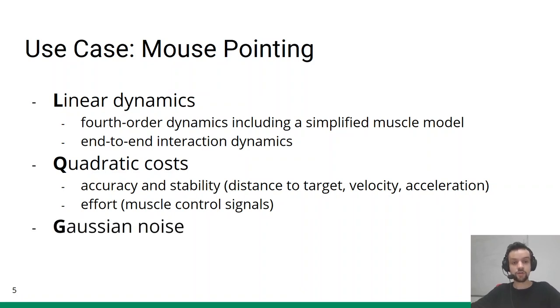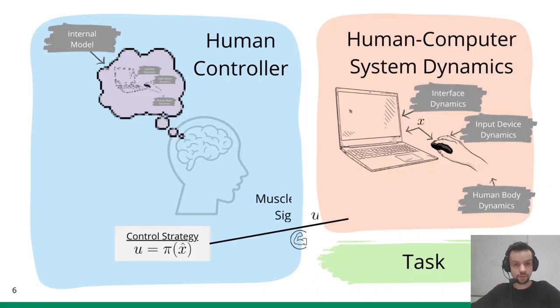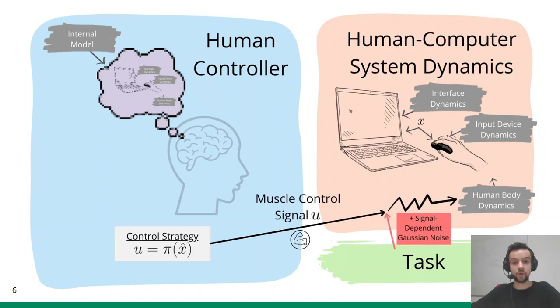Finally, it is well known from human motor control that humans cannot control their muscles exactly, but movement is always subject to signal-dependent motor noise. In the past, this has been suggested as a possible explanation for the speed-accuracy trade-off. We account for this by adding signal-dependent Gaussian noise to the muscle controls. Similarly, humans cannot observe the true state X perfectly, but perceptions are also subject to Gaussian noise.